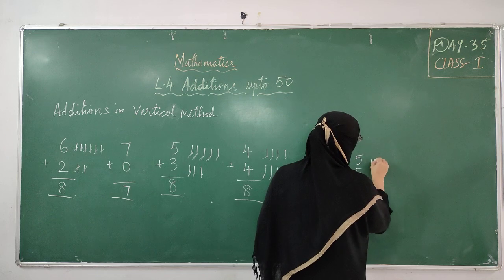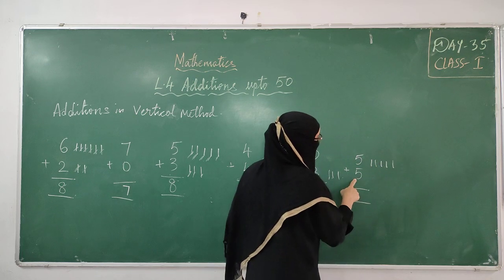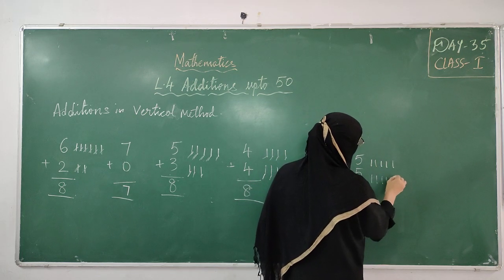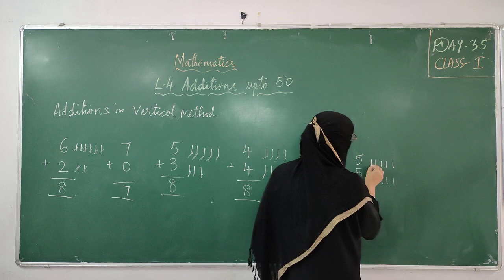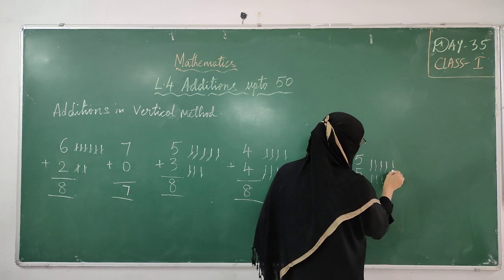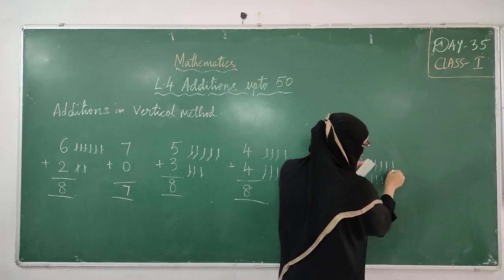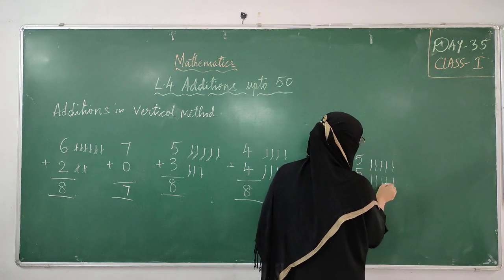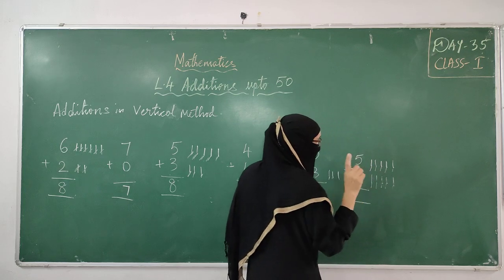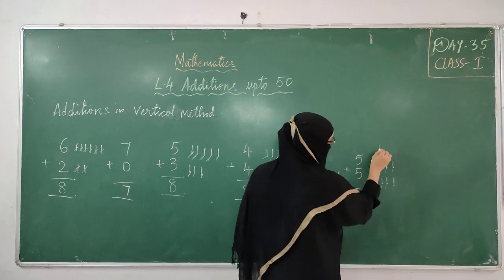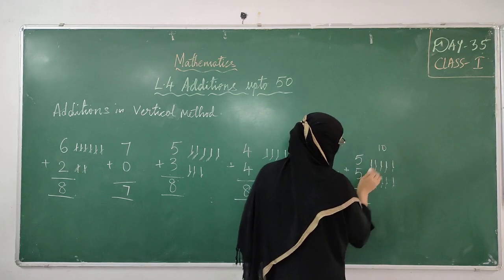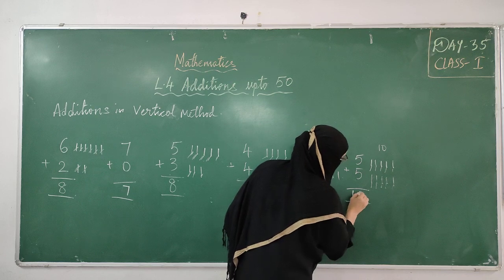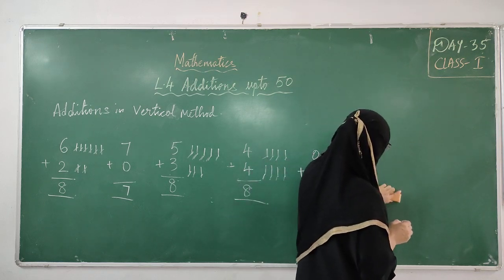Next: 5 plus 5. Count 5 lines, then 5 more lines. Continue counting from 1 all together: 1, 2, 3, 4, 5, 6, 7, 8, 9, 10. So my answer is 10. 10 means a 2-digit number. So I have to directly write 10 here.